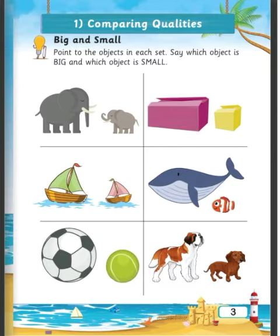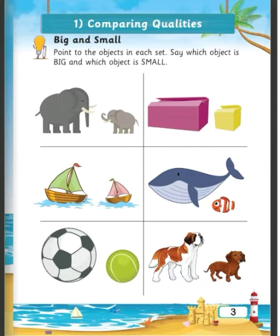Look at the first picture. There are two elephants in which the first elephant is Big and the second elephant is Small in size. Now come to the next picture that is of Box, in which the first box is Big and the second box is Small. Then the next picture of Boat, in which the first Boat is Big and the second Boat is Small.